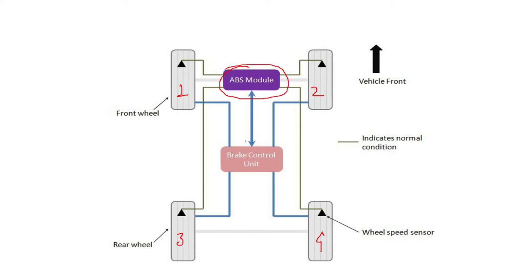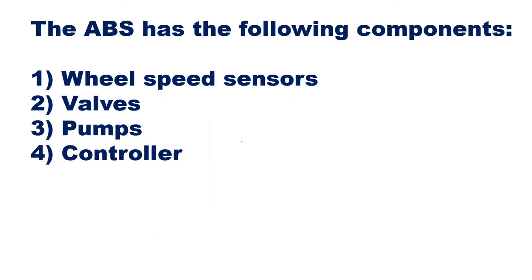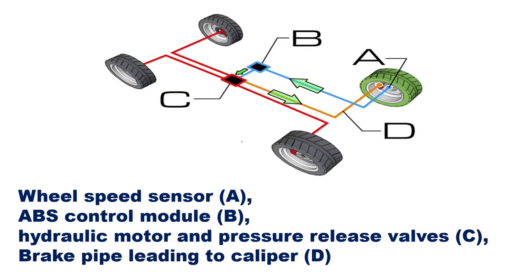That ABS module is going to control your brake control unit and then the brakes will be applied. Now, how exactly this is done we will see in the next diagram. The ABS has the following main components: wheel speed sensors, valves, pumps, and controllers.